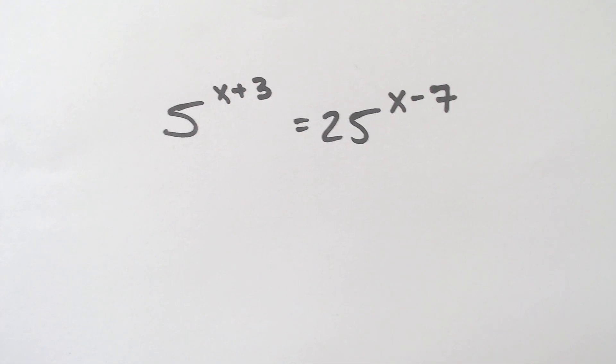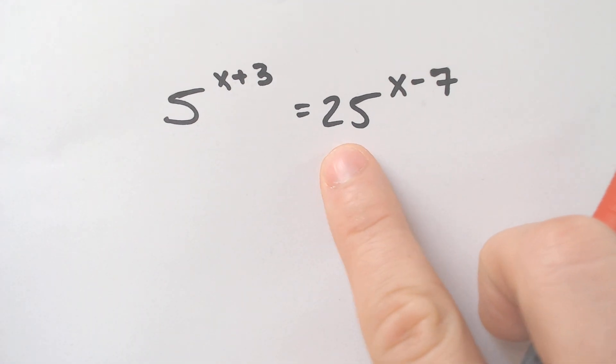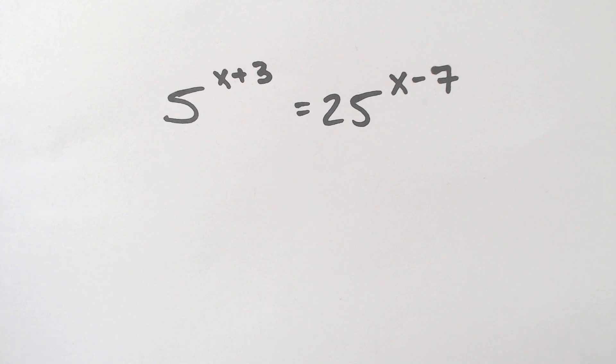Now, this can be done two ways, but normally you will have bases such as this 5 and this 25 that you want to make the same. For instance, if we have this scenario right here,